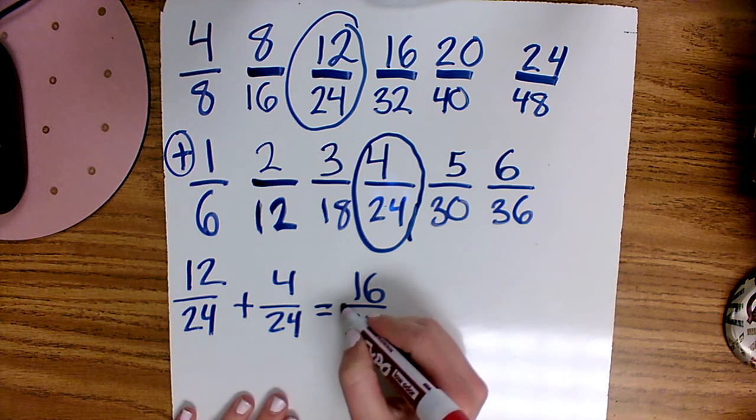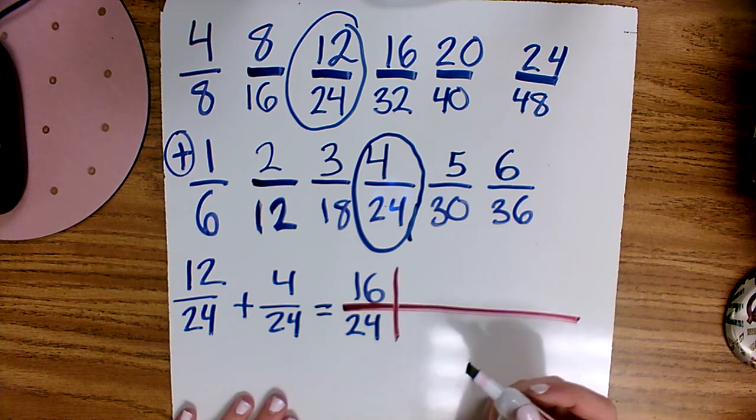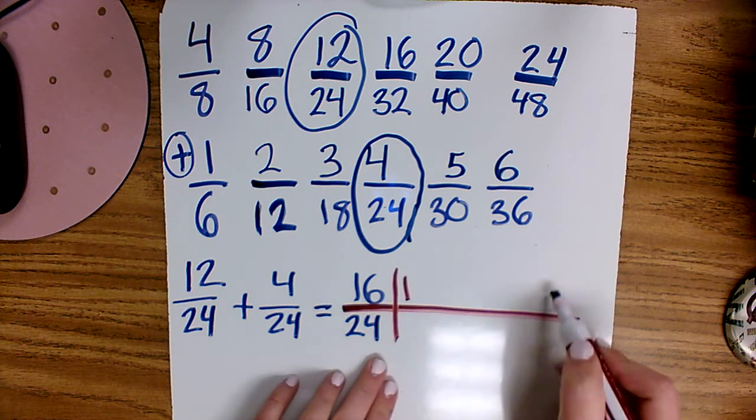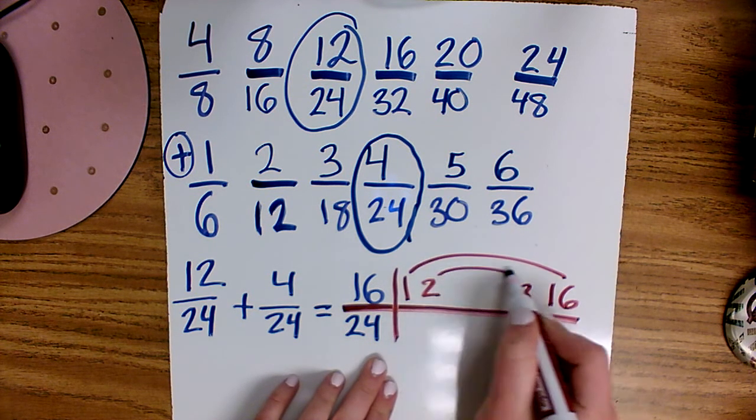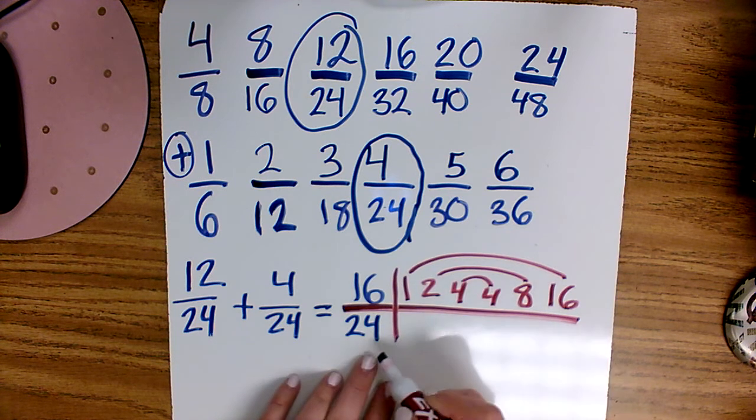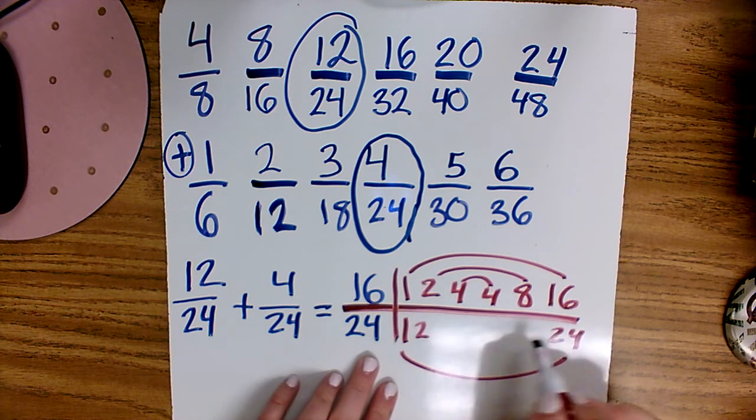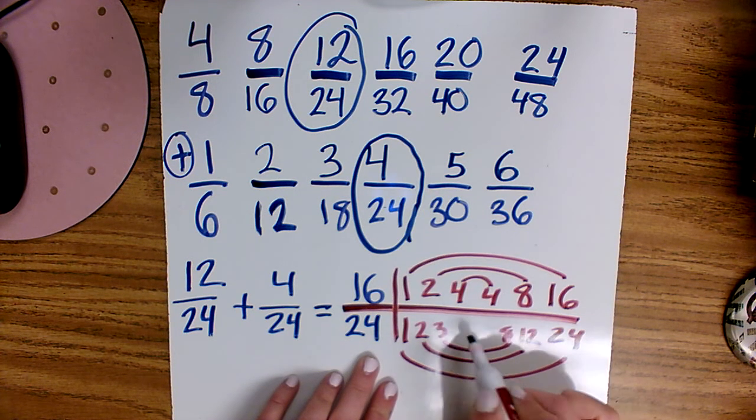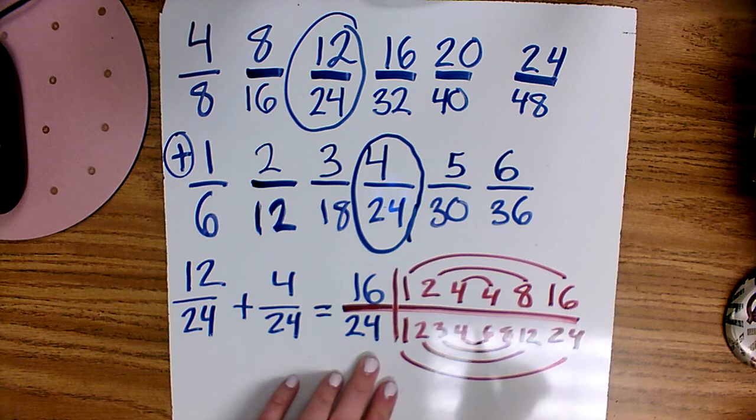When we reduce or simplify a fraction we first find the GCF using our follow the rainbow strategy by writing out our factors. So for sixteen I have one and sixteen, two and eight, four and four. For twenty-four I have one times twenty-four, two times twelve, three times eight, four times six.